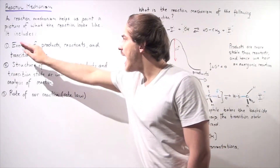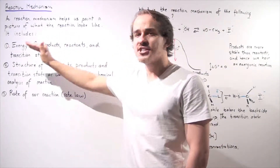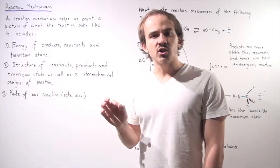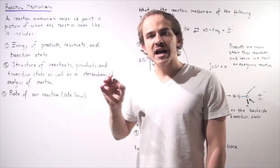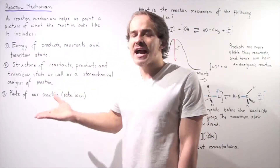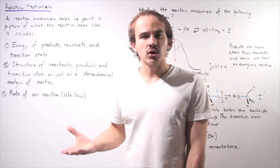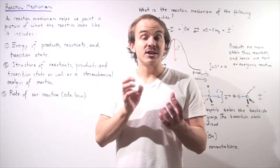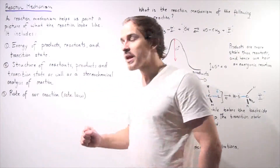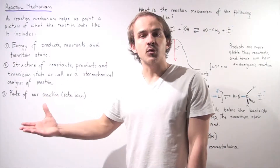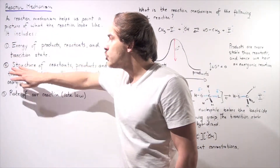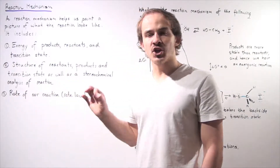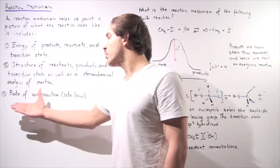Firstly, we should always include the energy of the products, reactants, and transition state. Secondly, we should include the structure of our reactants, products, as well as transition state. And we should also include the stereochemical analysis of our reaction. In other words, according to point one, is our reaction exothermic or endothermic? Is it exergonic or endergonic? In the second step, we actually have to figure out how our reactants react — in what way, in what manner — to produce our products. We should also include the rate of our reaction. Points one and two really deal with the thermodynamics of our reaction, and point three deals with the kinetics of our reaction. Our rate law determines the rate of our reaction.